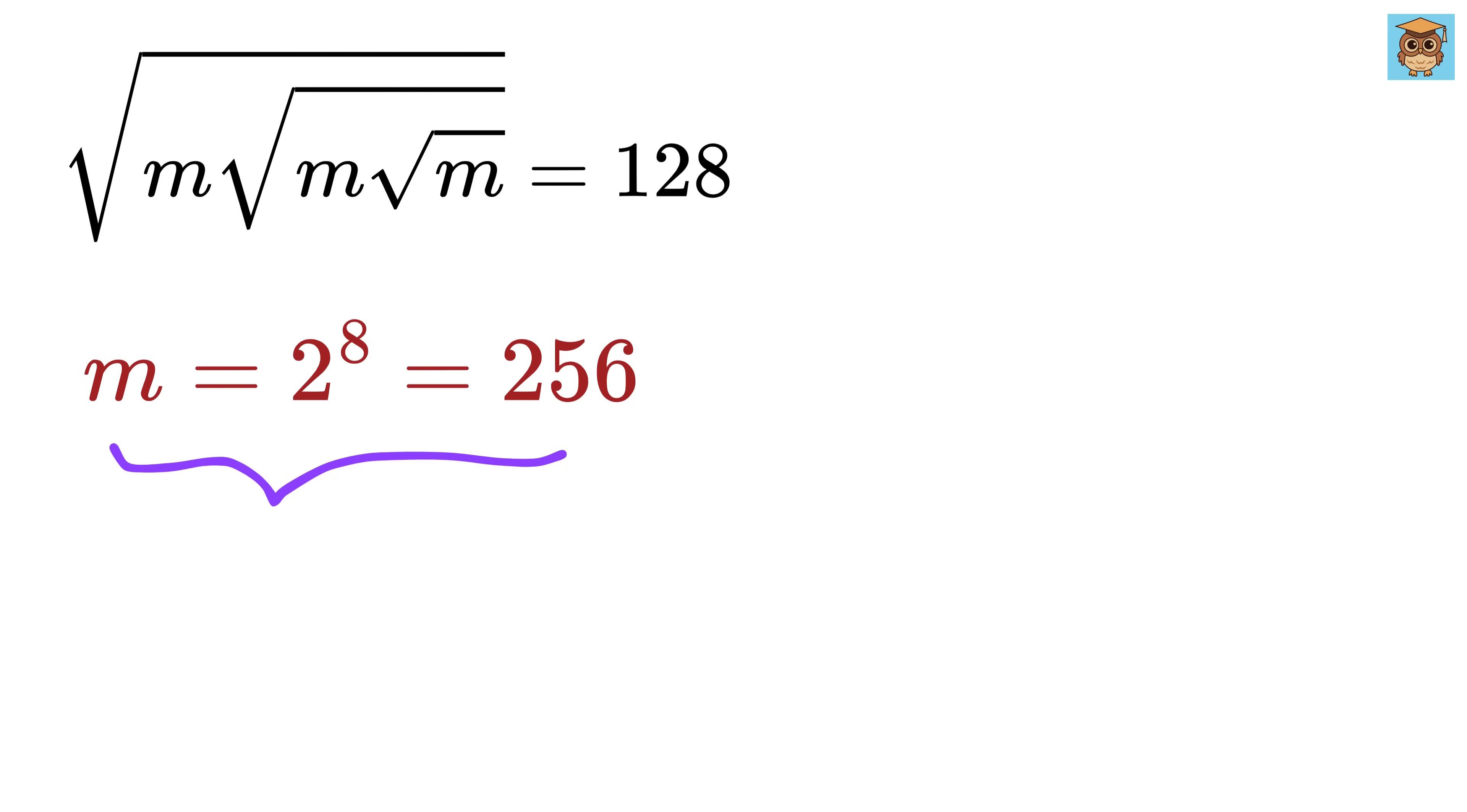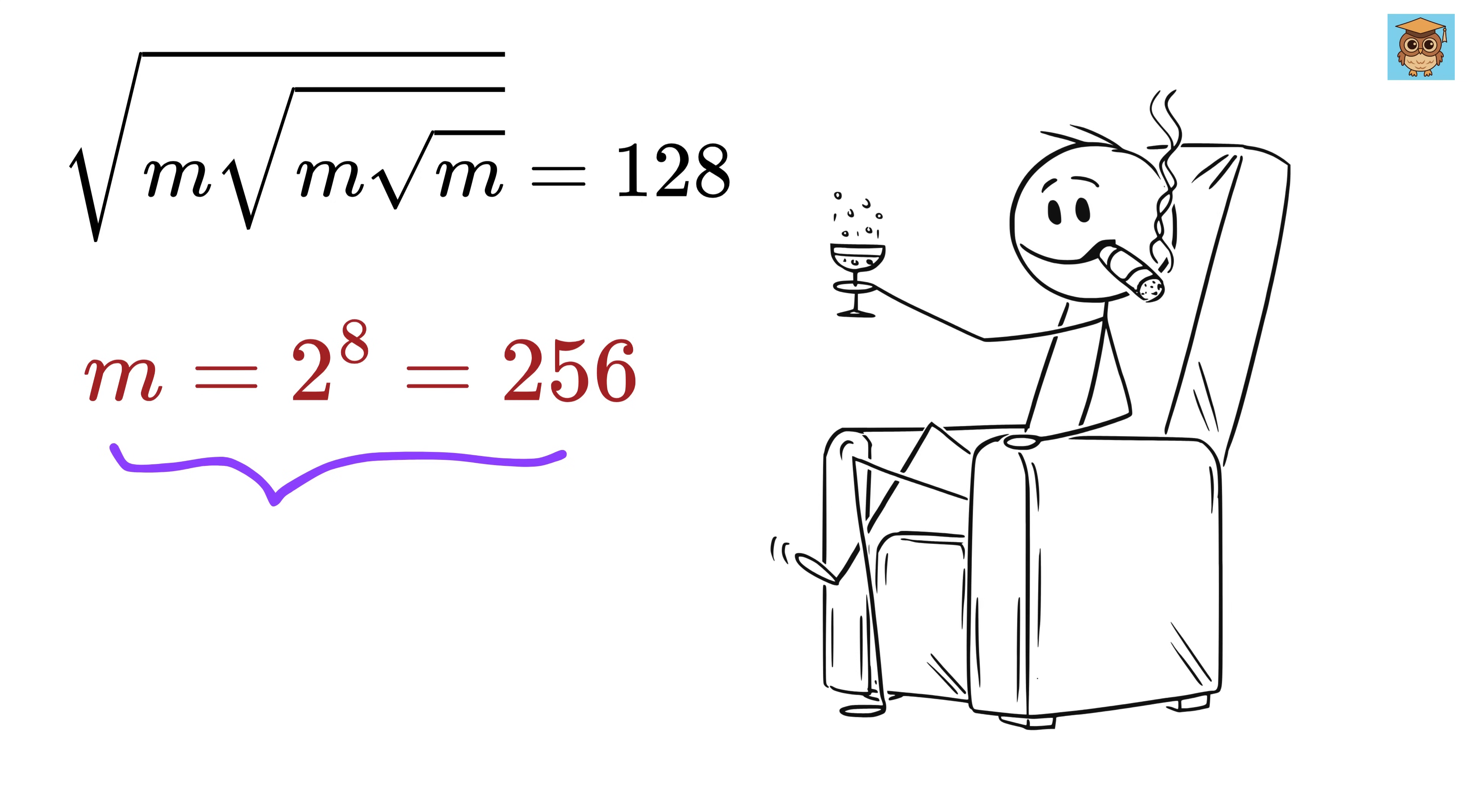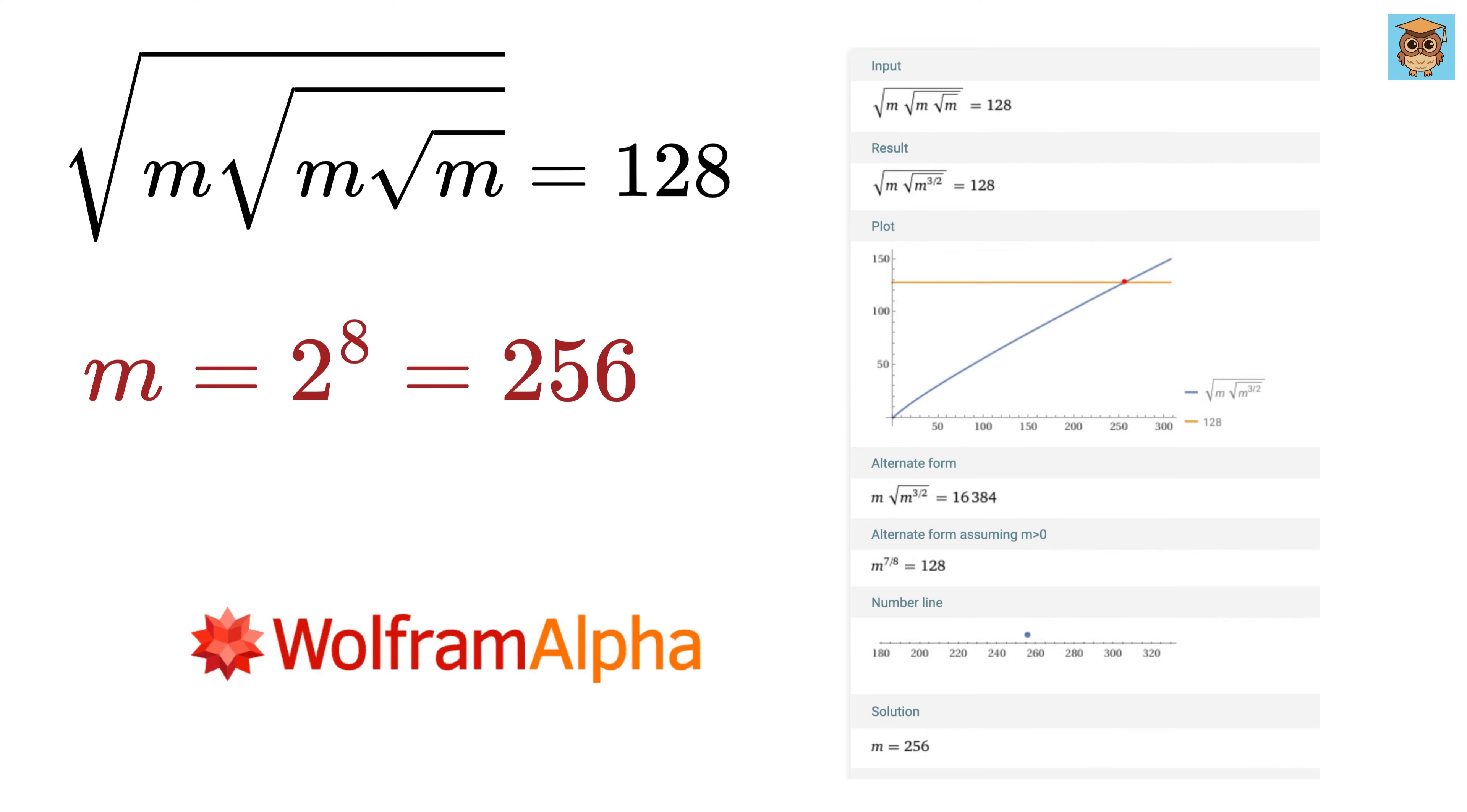This means m equals 256. See, I told you that m will turn into a smaller number. Let us also verify the same using Wolfram Alpha, and there you go.